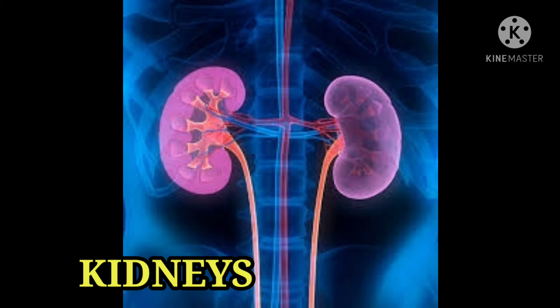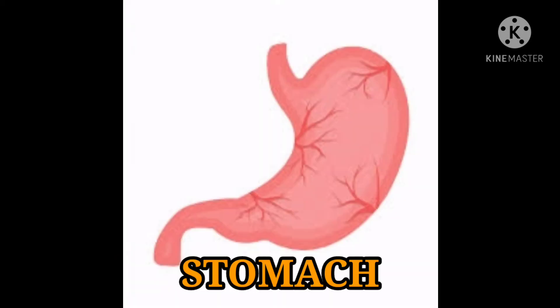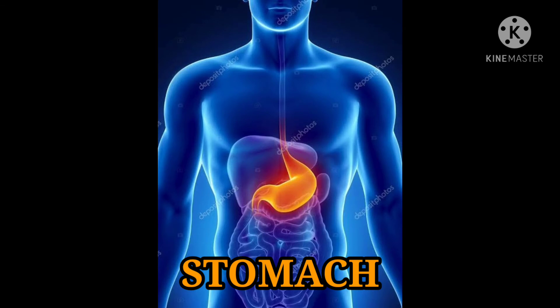5. Stomach — the stomach is a J-shaped organ. It is located on the left side of the upper abdomen. When we eat food, it reaches the stomach and the stomach helps to digest the food.